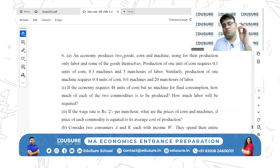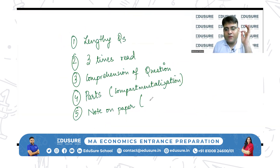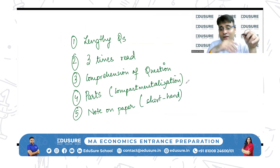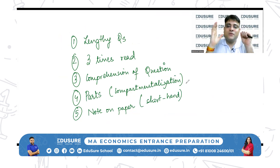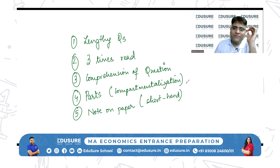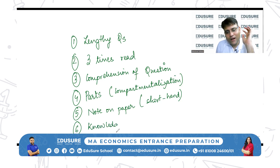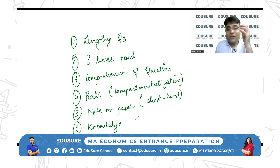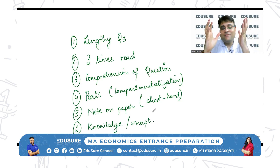Along with compartmentalization, I take shorthand notes on paper about what the question is saying — small, small notes — then come back to the question. When I read my note, I get a much better understanding. This note is prepared by me in the format that I am comfortable with. The sixth component, without which nothing will fall into place, is knowledge and concept — if you don't know what production cost is, none of this helps.